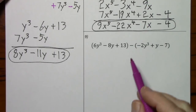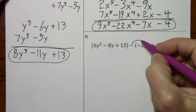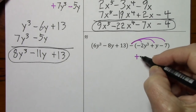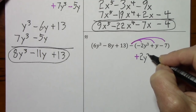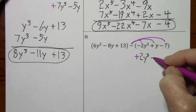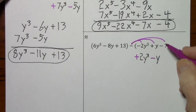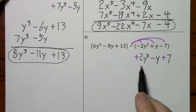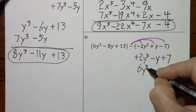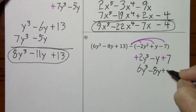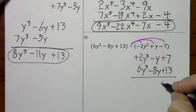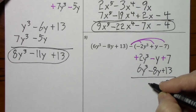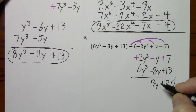Looking at number 9, we'll have to distribute this negative to each term. First we'll have a positive 2y to the third, then negative, and negative times negative gives us a positive 7. I'll put these under the like terms. Signs are the same — there's a 1 in front — and signs are the same.